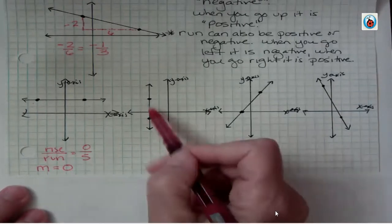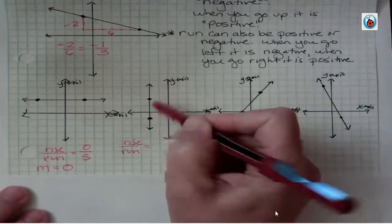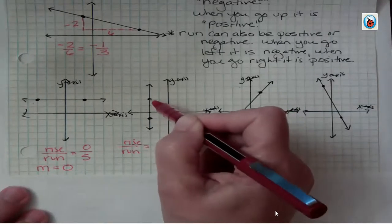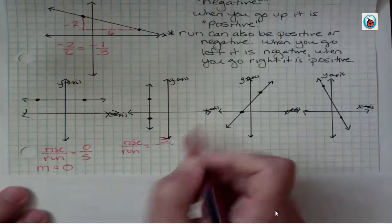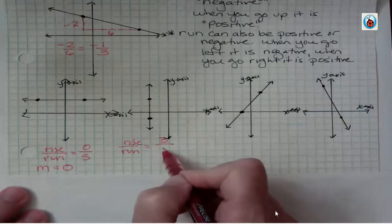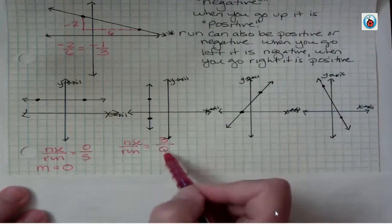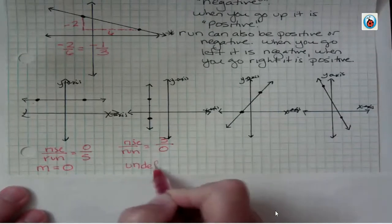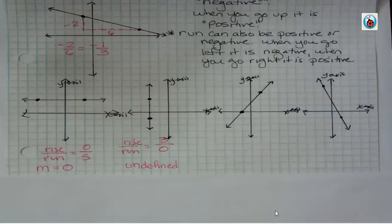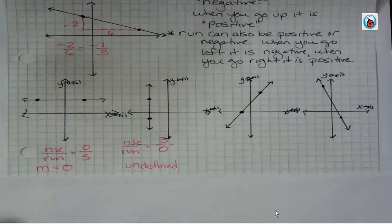Now let's look at the vertical line. From one point to the next, I'm going three up, so my rise is three. But horizontally, from this point to this point, I'm not going left or right — I'm going directly up — so I have a run of zero. If I have anything divided by zero, that's undefined. So we say this slope is undefined. Sometimes you'll hear 'no slope,' but it's not zero — zero is what we get when the rise is zero. Undefined is what we get when the run is zero.